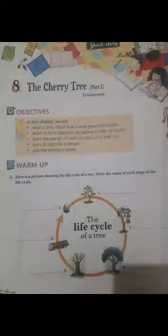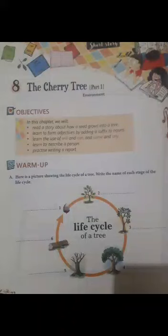Hello everyone, today we will do chapter number 8 from English Literature. The name of the chapter is 'The Cherry Tree, Part 1.' This chapter is in two parts with a poem in between. We will first complete this part, then do the poem. Now have a look at your book. Read the first part of a story by Ruskin Bond about a boy who discovers the joy of planting a tree and watching it grow.